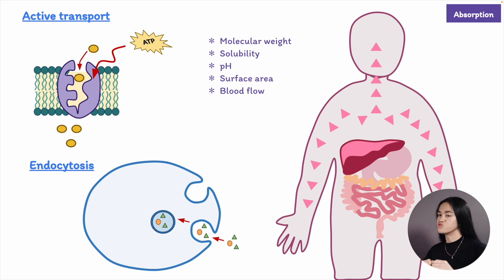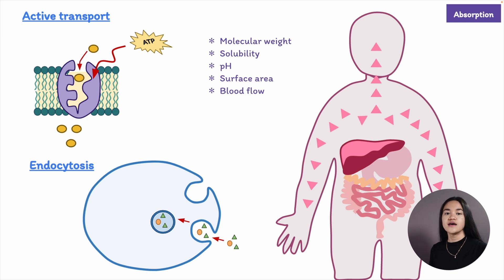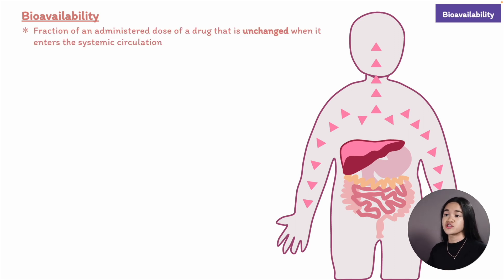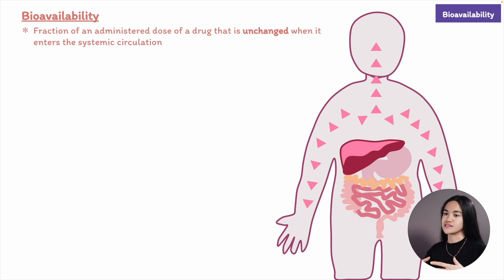The rate and extent of absorption — how quickly this process occurs and how much of the drug reaches the bloodstream — are determined by a number of factors. This leads us to the concept of bioavailability, which is the fraction of an administered dose of a drug that is unchanged when it enters the systemic circulation.